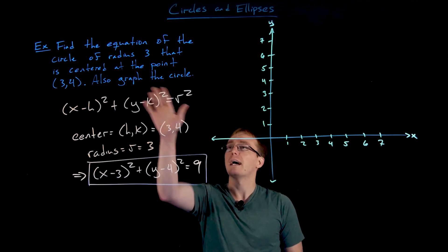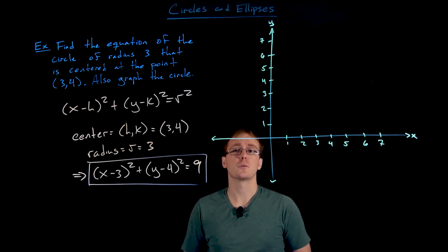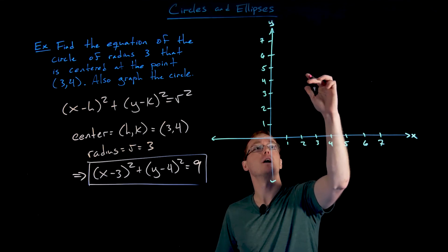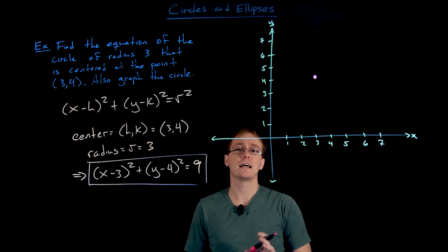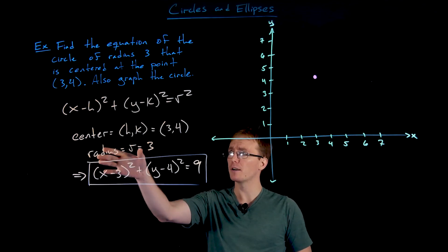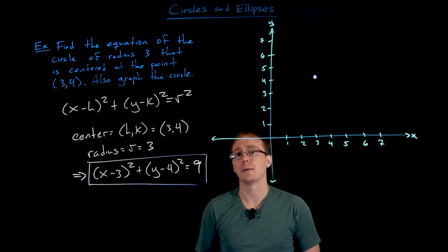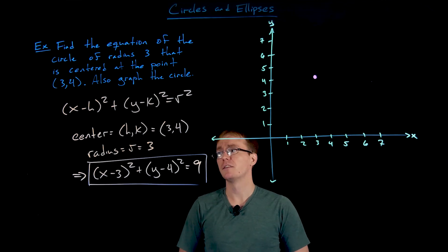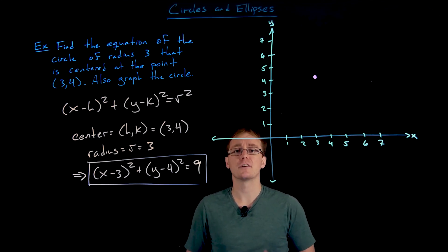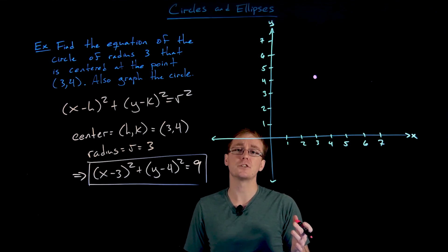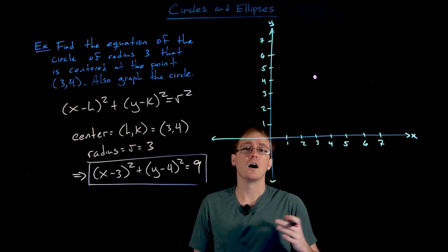To graph the circle, we start with the center point (3, 4) — right three and up four from the origin. Remember, the center is not actually part of the circle itself; it just helps us draw it. The circle is composed of all points at a distance of three from the center. I always use the points directly above, below, to the left, and to the right of the center.